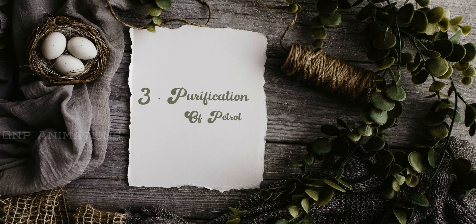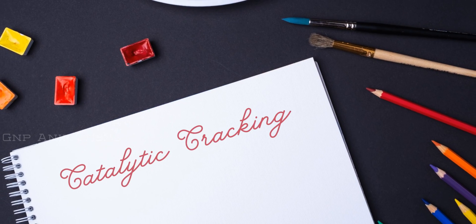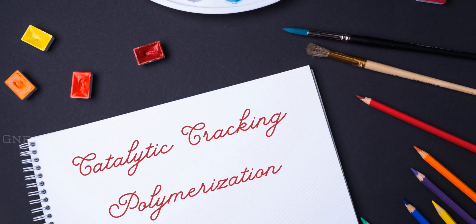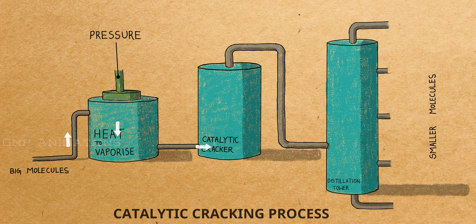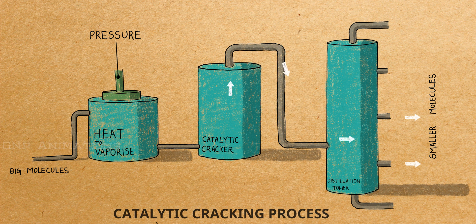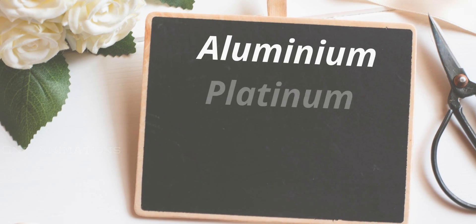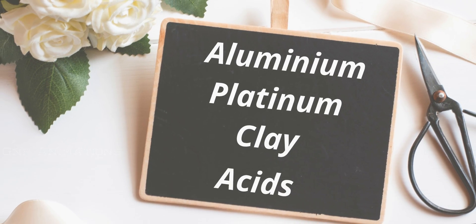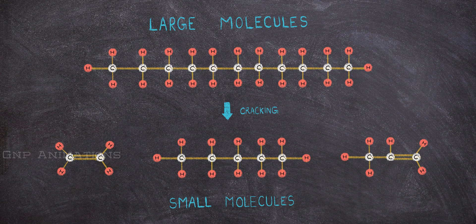Step 3: Purification. Once the oil has been distilled into fractions, further processing in a series of chemical reactions is necessary to create petrol. Catalytic cracking is one of the most important processes in oil refining. This process uses a catalyst, high temperature, and increased pressure to affect chemical changes in petrol. Catalysts such as aluminum, platinum, processed clay, and acids are added to petrol to break down larger molecules so that it will possess the desired components of petrol.